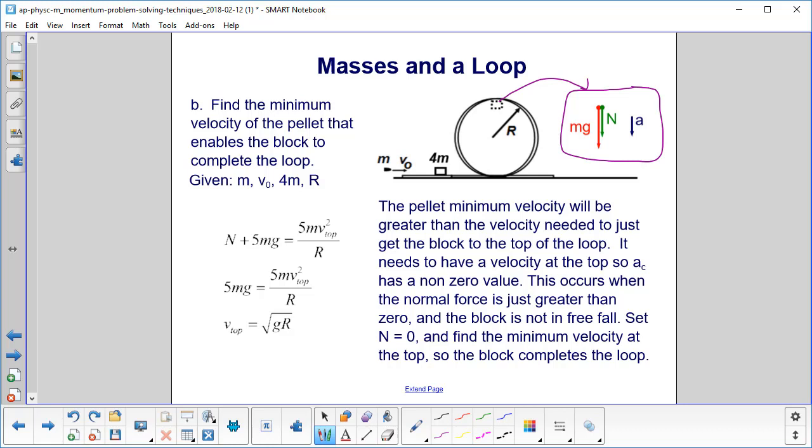This will occur when the normal force is just greater than 0, so the block won't be in free fall, but it will have just enough to get around the loop and continue on. So we will set the normal equal to 0 and find the minimum velocity at the top so the block completes the loop.